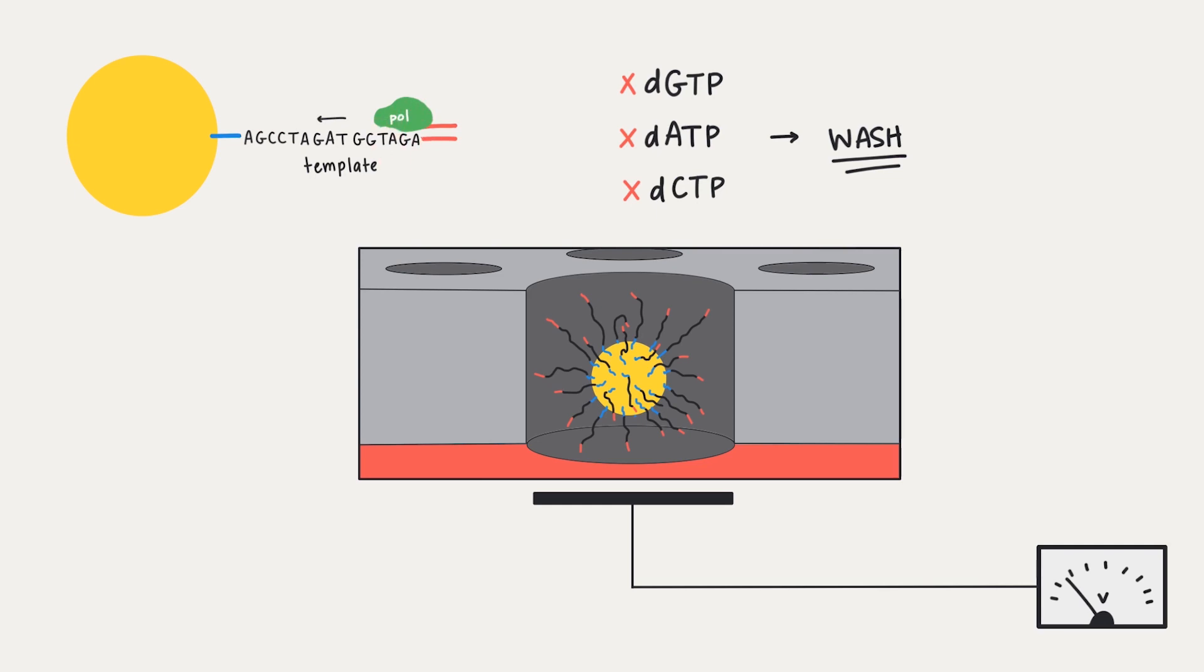If the nucleotide we added does not complement the next base on the template, there will be no release of hydrogen and therefore no polymerization reaction. For example, if we flood the well with guanine, no voltage is detected, which means that the base wasn't incorporated. So, we'll need to wash out the unattached nucleotides before the next cycle of nucleotides are added to avoid confusing which base is actually being added. In this example, adding adenine and cytosine also didn't change the voltage, so we have to wash it away.